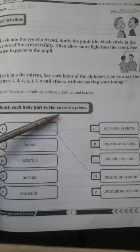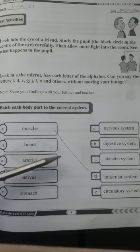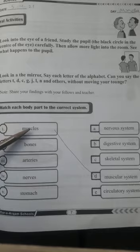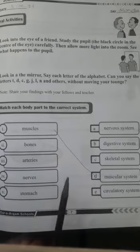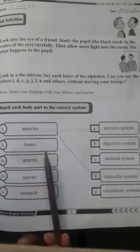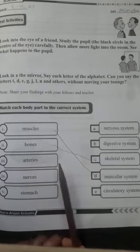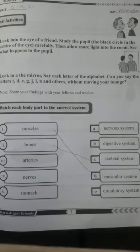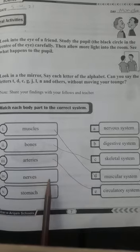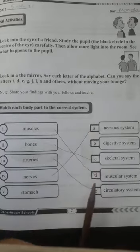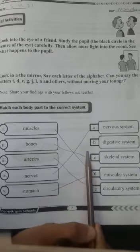Match each body part to the correct system. These are our body parts and these are the systems — you have to match with the relevant system. Number one: muscles with muscular system. Number two: bones with skeletal system. Number three: arteries with circulatory system. Number four: nerves with nervous system. Number five: stomach with digestive system.